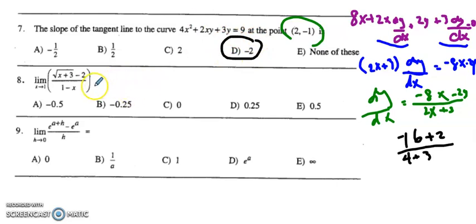For the next one, you're going to have to multiply by the conjugate of the numerator. Remember, the conjugate is the square root of x plus 3 plus 2 in the numerator, and multiply that in the denominator as well, so it's really multiplying by a fancy form of 1.